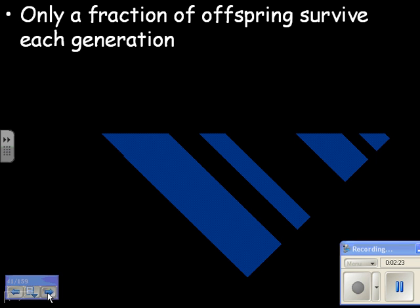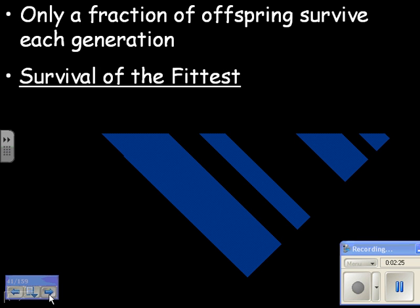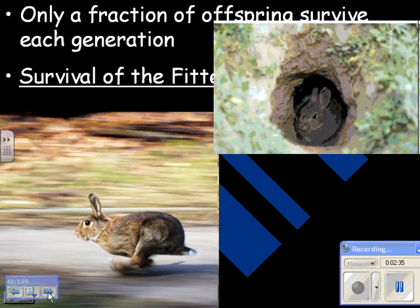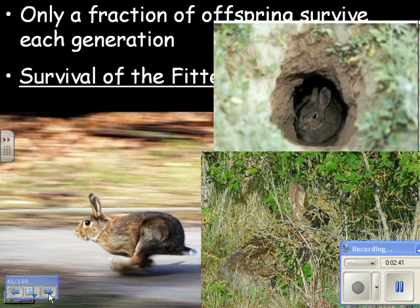Only a fraction of the offspring survive to each generation, and that's what Darwin called survival of the fittest. Maybe this bunny is faster than the others, so it survives — it can run away from the foxes. Maybe that bunny hides better or has a deeper hole. Maybe that one has better camouflage, so it survives better. The ones that are not as fast, or not as well camouflaged, or don't have a good hole, wouldn't survive into the next generation.